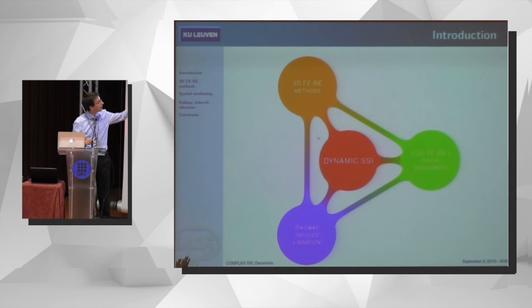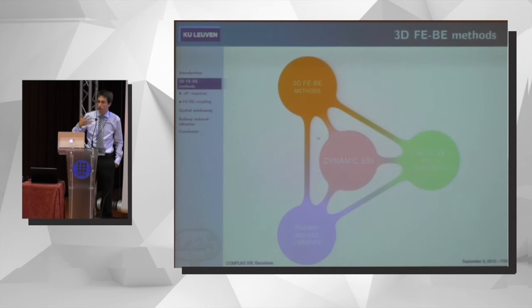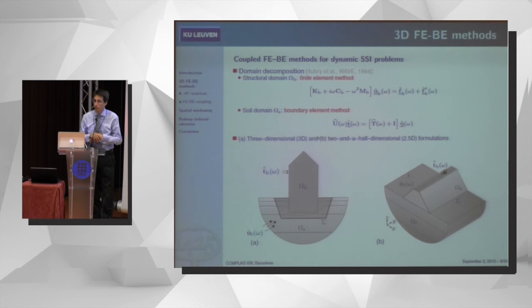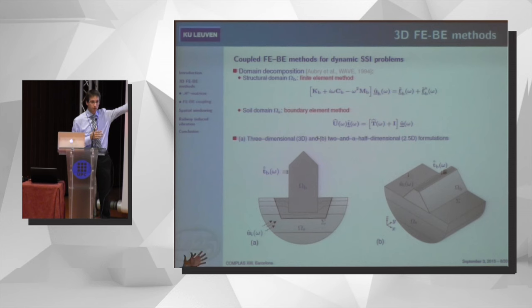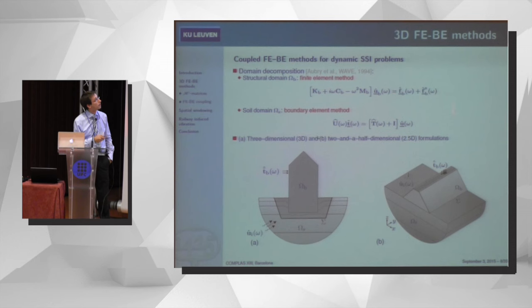In the third part, I'll focus on the specific application of railway-induced vibration. So let's start with three-dimensional coupled finite element and boundary element methods. Coupled finite element and boundary element methods are a very elegant way for tackling this problem. We can use finite elements to discretize the structure, and also some part of the soil in the vicinity of that structure. These finite elements can then be coupled to a boundary element to account for wave propagation in the soil.